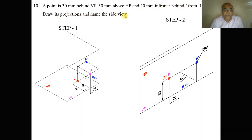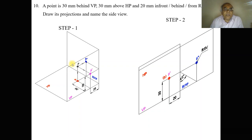In the previous case it was 25 mm from LPP; now in this case we are taking the right profile plane. Since the condition given is behind VP and above HP, the point has to be in the second quadrant. And since it is 20 mm from RPP and behind VP, it should be behind RPP, so we look from the right side view.